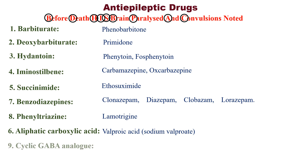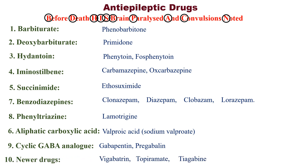'A' stands for aliphatic carboxylic acid — example: valproic acid. 'C' stands for cyclic GABA analog — examples: gabapentin and pregabalin. Finally, 'N' stands for newer drugs — examples: vigabatrin and topiramate, etc.